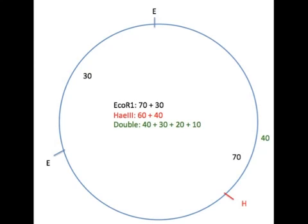By trial and error, place the second enzyme sites in the large fragment so that you get the appropriate sized fragments for the double digest. Let's try making the first HaeIII cut site 40 kilobases from the 12 o'clock position. That leaves 30 kilobases in the larger 70 kilobase EcoRI fragment. That then must be cut again into a 20 and a 10 kilobase fragment so that we've got all of the fragments in our double digest: a 40, a 30, a 20, and a 10.